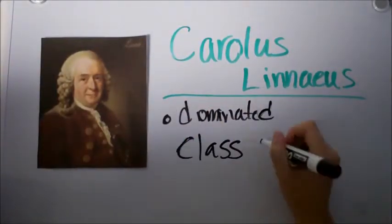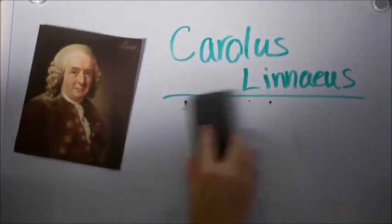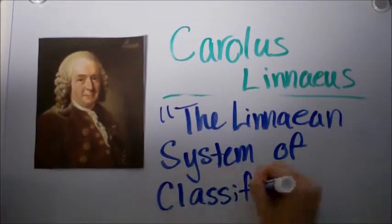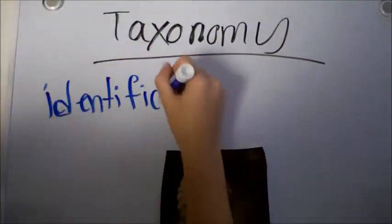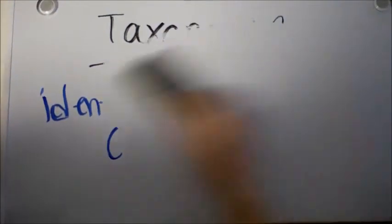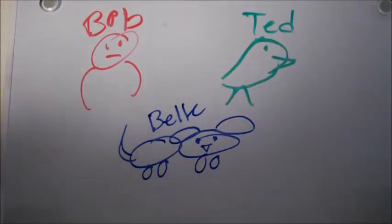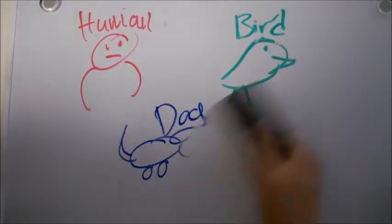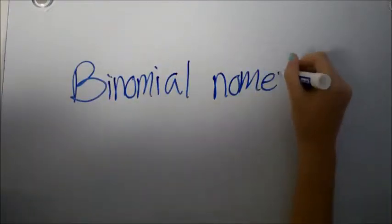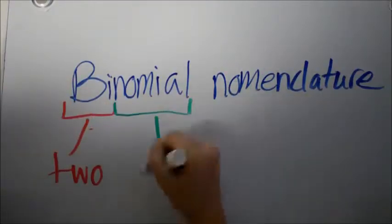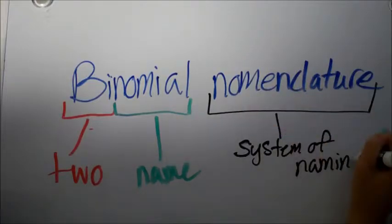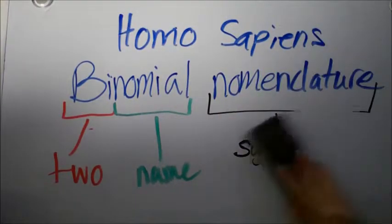So this guy, also known as Carl Linnaeus, also played a part in classification. He made up this thing called taxonomy, which is the identification naming of classification. Like you naming your pets a specific name, each thing has a more scientific name. Binomial nomenclature breaks things into two, giving it its more scientific name, like homo sapien.